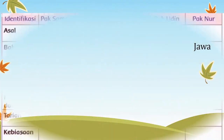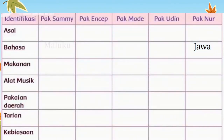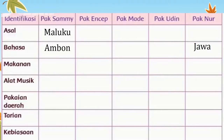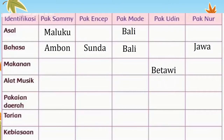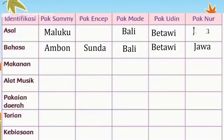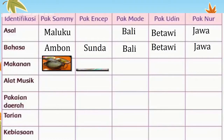Bagaimana bentuk keragamannya? Pak Sami berasal dari Maluku, bahasa yang digunakan adalah bahasa Ambon. Pak Ancep berasal dari Sunda, maka bahasa yang digunakan adalah bahasa Sunda. Pak Made berasal dari Bali, bahasa yang digunakan adalah bahasa Bali. Pak Udin berasal dari Betawi, maka bahasa yang digunakan adalah bahasa Betawi. Sedangkan Pak Nur berasal dari Jawa, maka bahasa yang digunakan adalah bahasa Jawa.